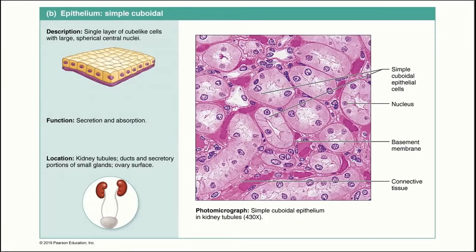We'll now look at simple cuboidal epithelium. As the name implies, these are a single layer of cube-shaped cells. These cells function in places where absorption and secretion are important, and for that reason they are found in the kidney tubules.